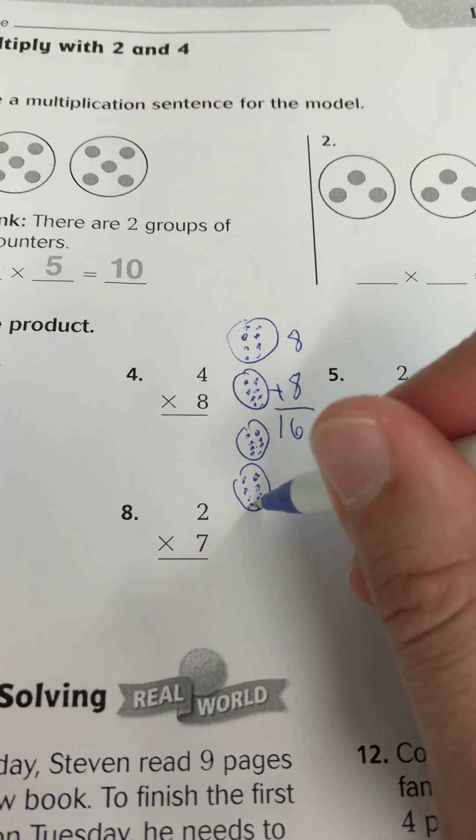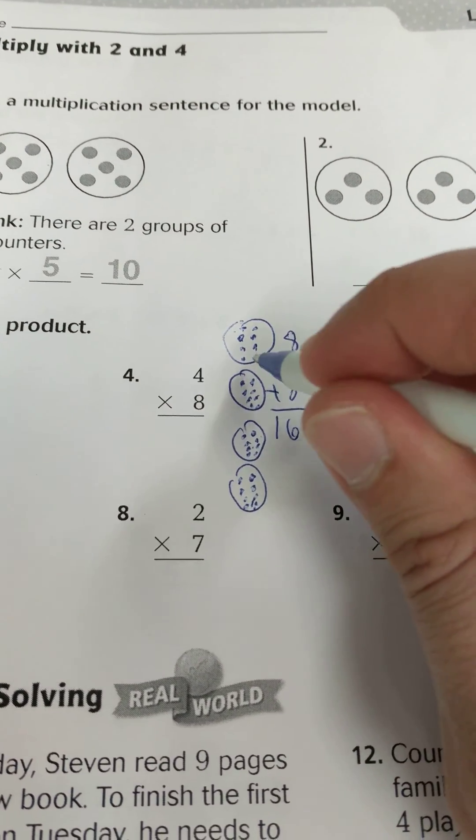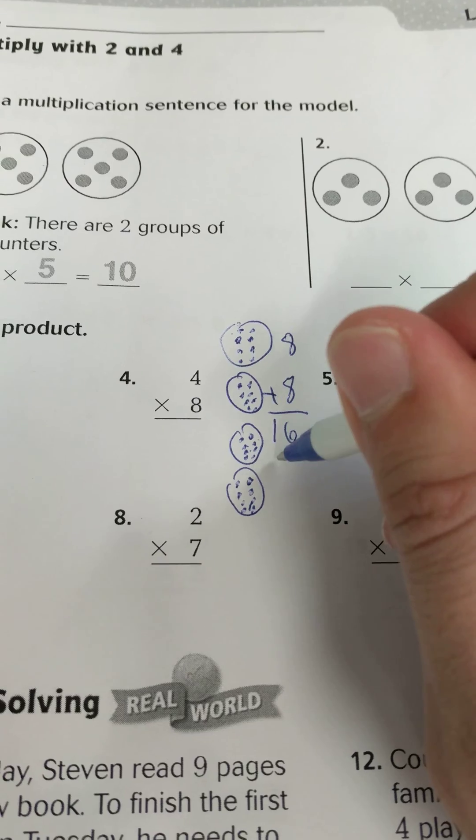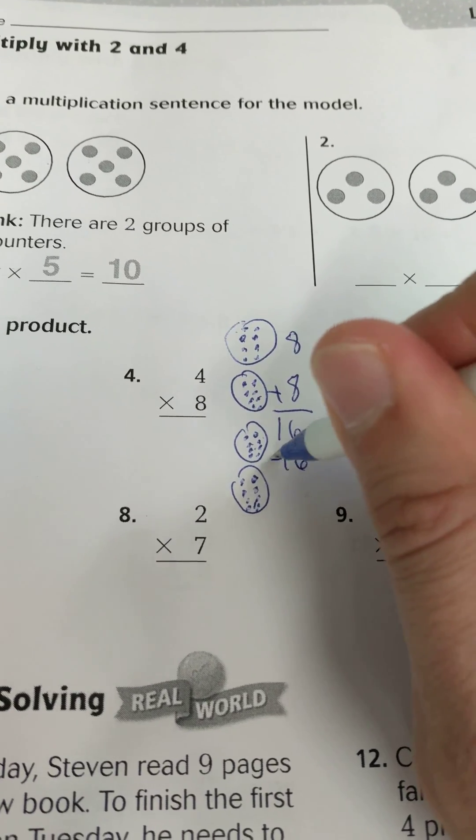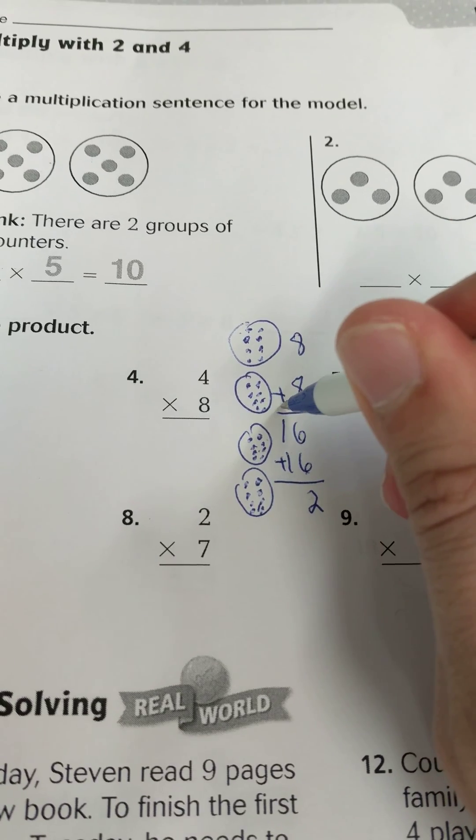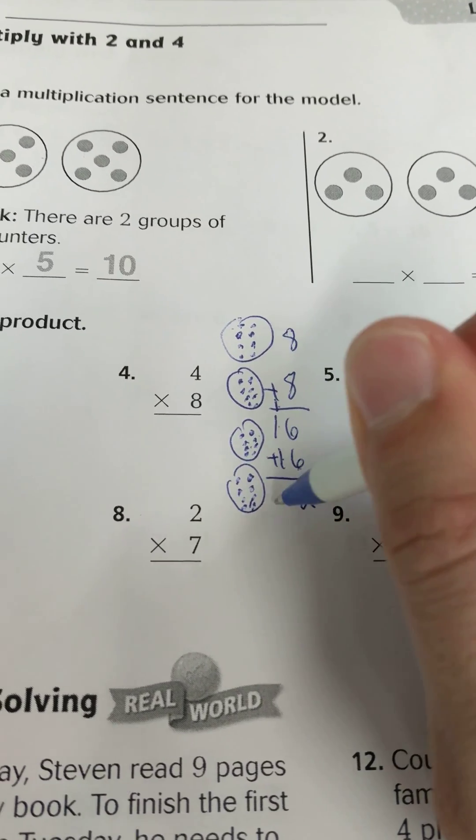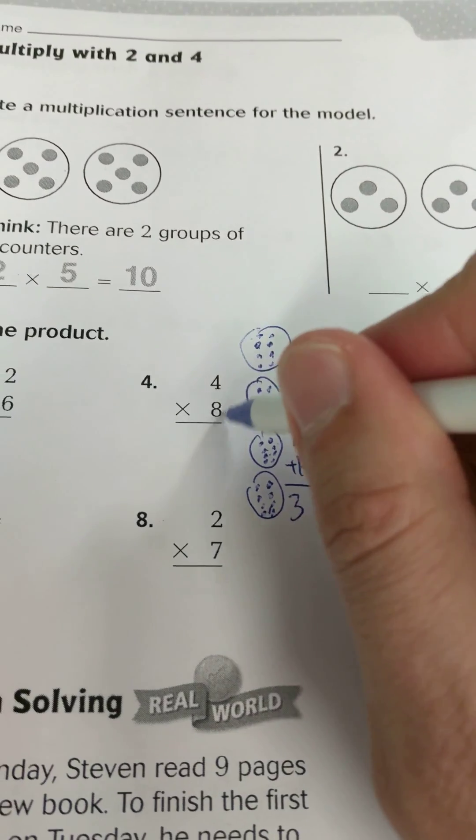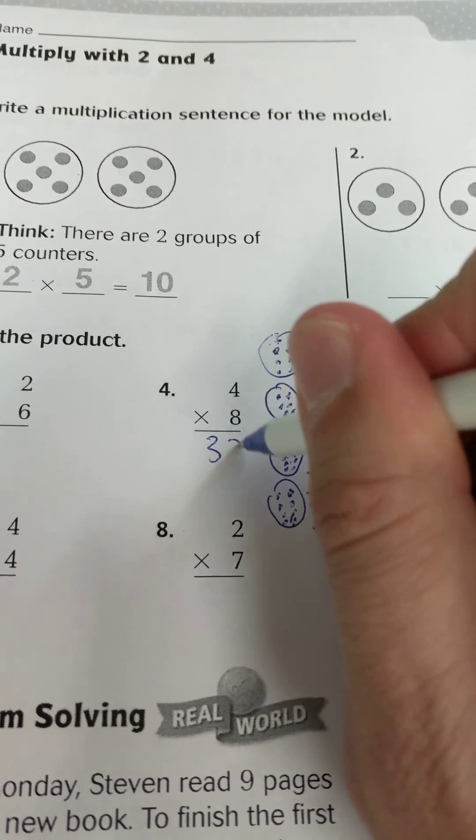I know this is another 16, because these are the same as the ones above it. So I'm going to add 16 plus 16. 6 and 6 makes 12. I regroup the 10. 1, 2, 3, and that is 32. So 8 times 4 equals 32.